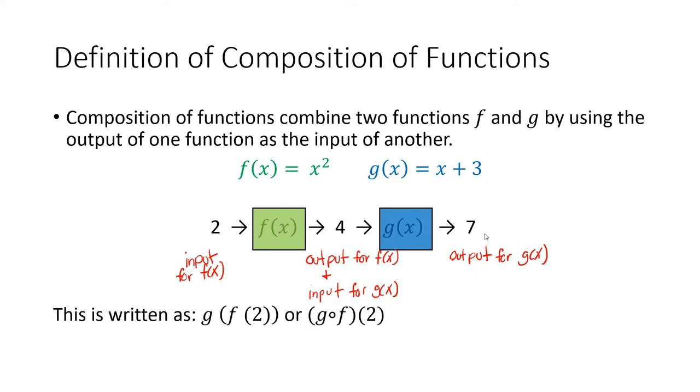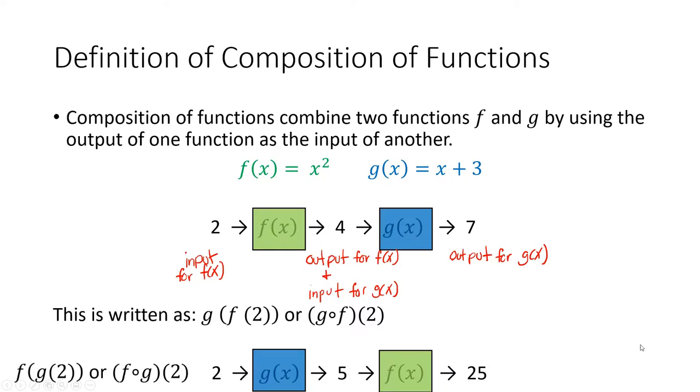This is written as g(f(2)) or g∘f(2). If we were to reverse the order and plug the function into g(x) and then f(x), 2 goes into g(x), 2 + 3 gives us 5. 5 goes into f(x), 5² is 25. This is f(g(2)) or f∘g(2).